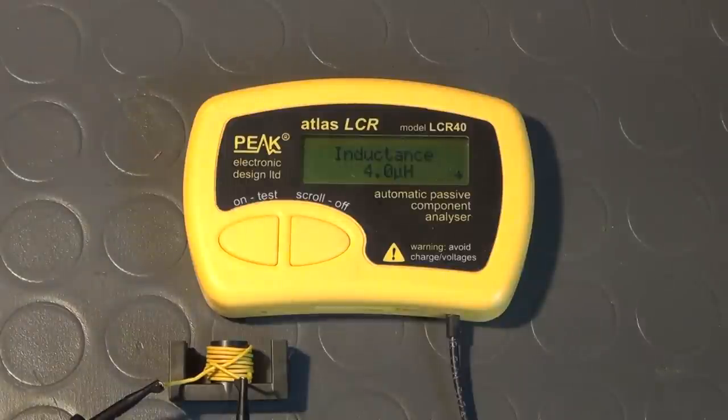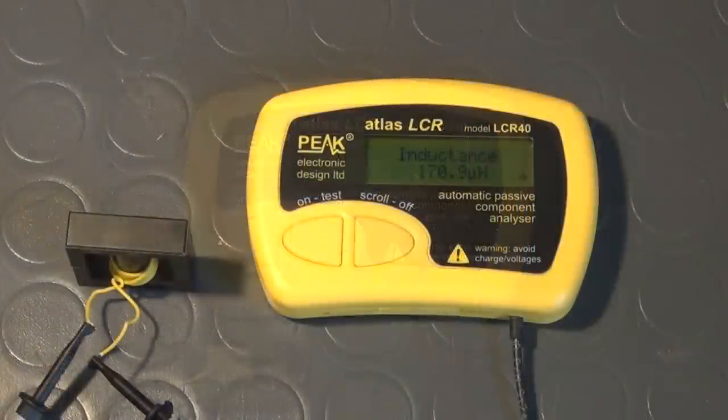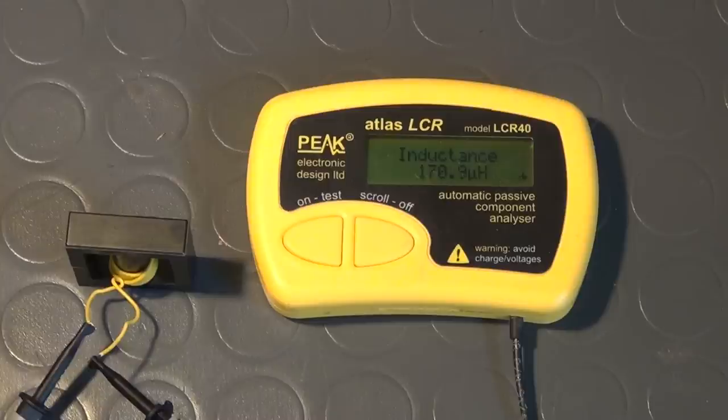But why did the inductance go up a bit when the half piece of the ferrite core was added to the air coil? And why did it increase even more with the two complete halves at work? There is one model used in electrical engineering which allows an intuitive understanding of these principles. It's called the magnetic circuit. The magnetic circuit is an analogy to the electric circuit. And that's why I'll try to explain them side by side.